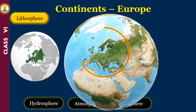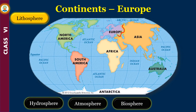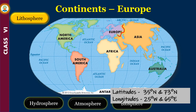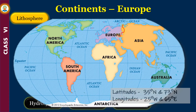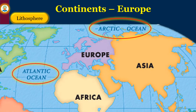Europe is the sixth largest continent of the world. It is joined to the continent of Asia in the east. Europe lies between 35 degrees north and 73 degrees north latitudes, and 25 degrees west and 65 degrees east longitudes. It is bounded in the north by the Arctic Ocean and in the west by the Atlantic Ocean. Its southern shores are washed by the Mediterranean Sea.